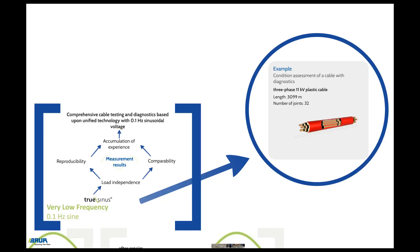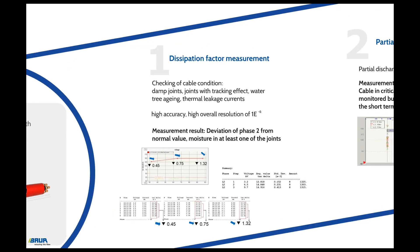The condition of a three-phase 11 kV plastic cable is to be assessed with the aid of cable diagnostics. The cable is about 3 km long and has 32 joints within this route. The dissipation factor measurement performed at the beginning supplies information on the general condition of the cable. This allows damp joints and joints subject to the tracking effect, water tree aging, or thermal leakage currents to be detected. A high level of accuracy and an overall resolution of 1×10⁻⁶ are necessary for the identification of damp joints.